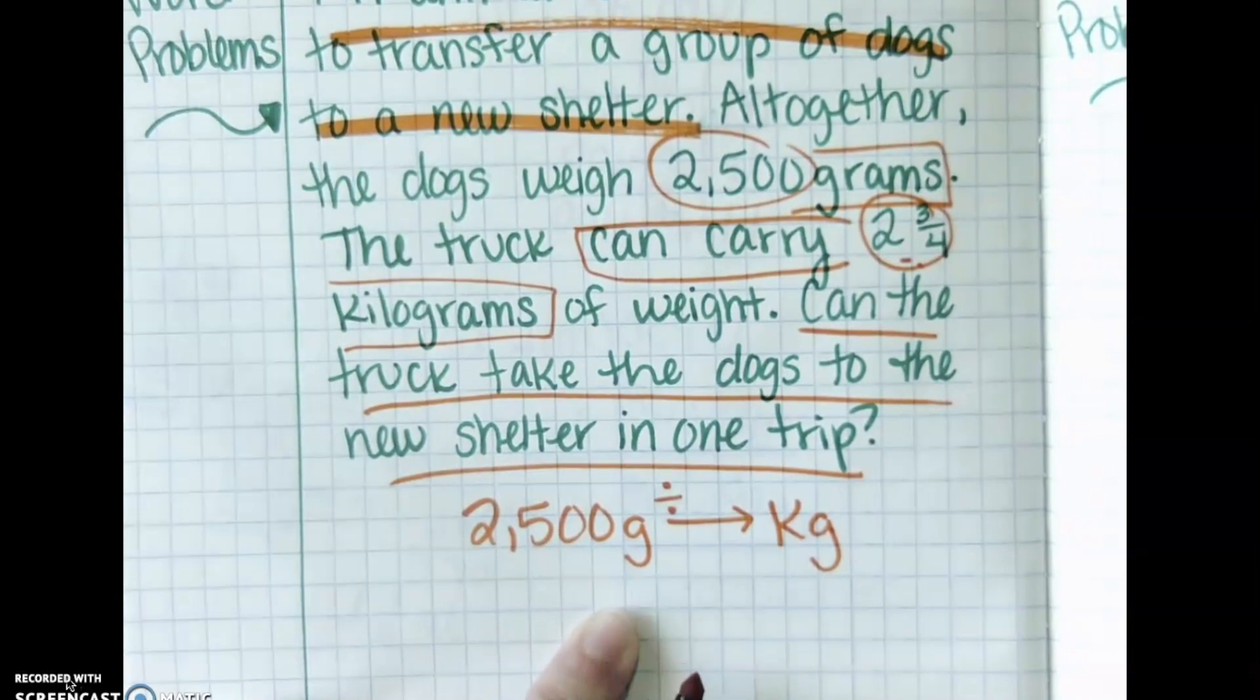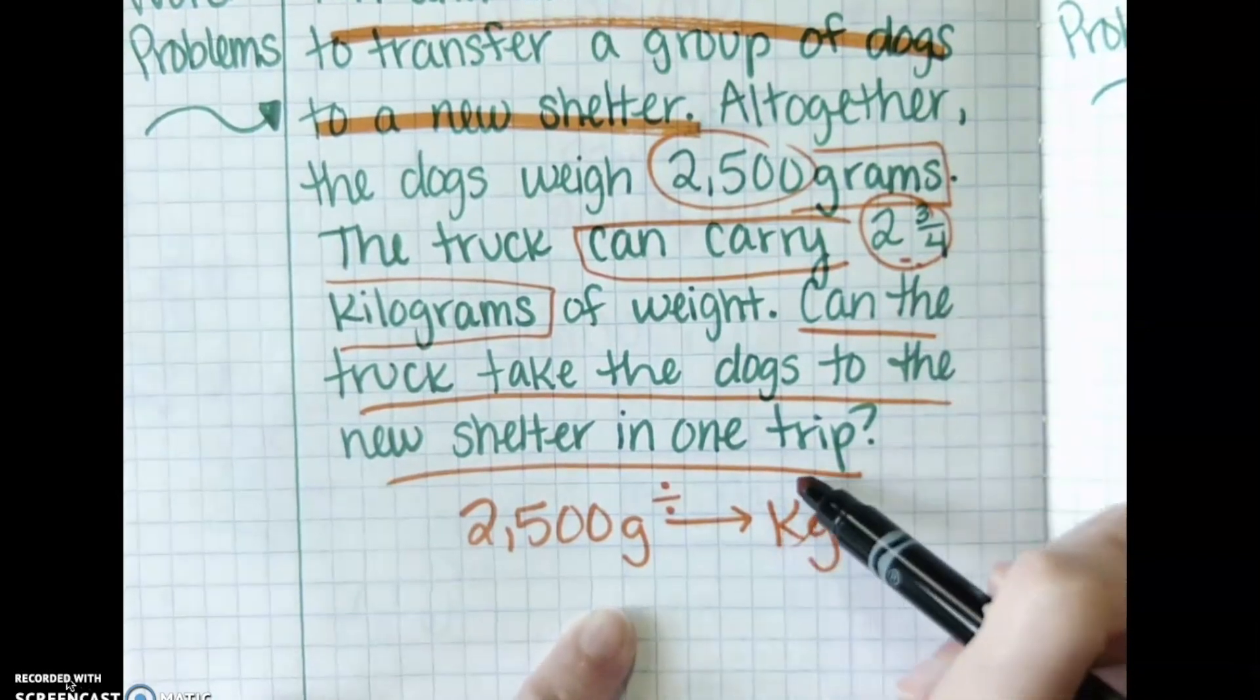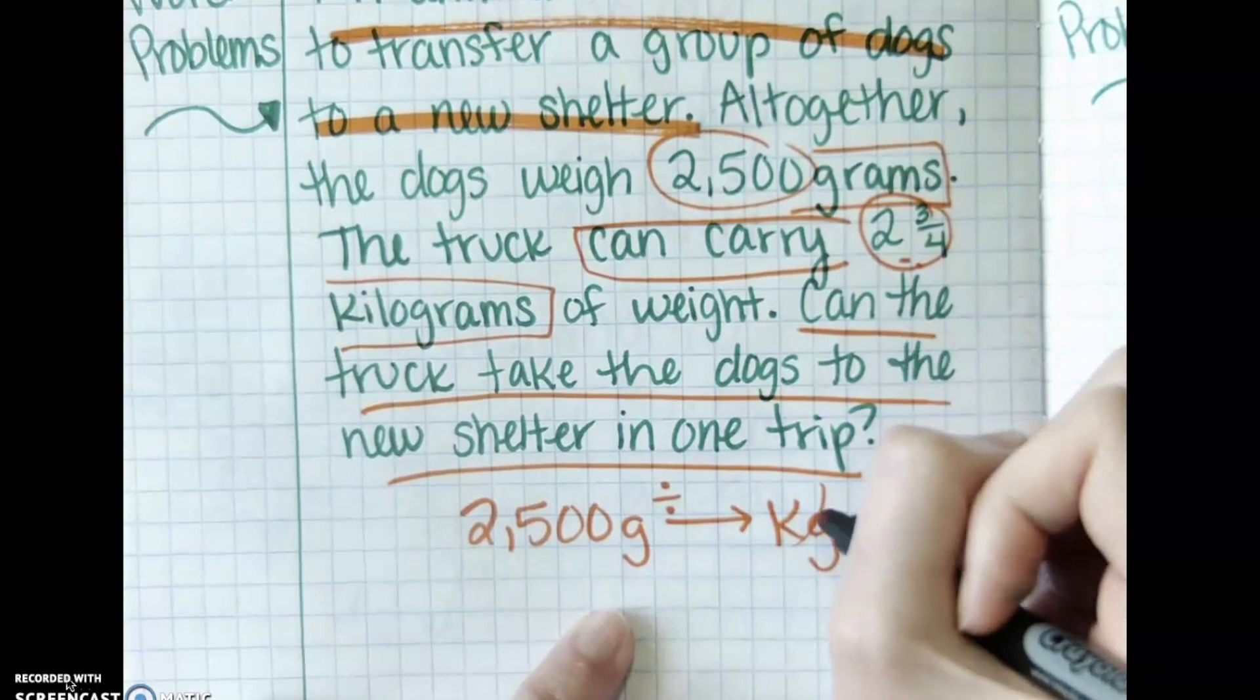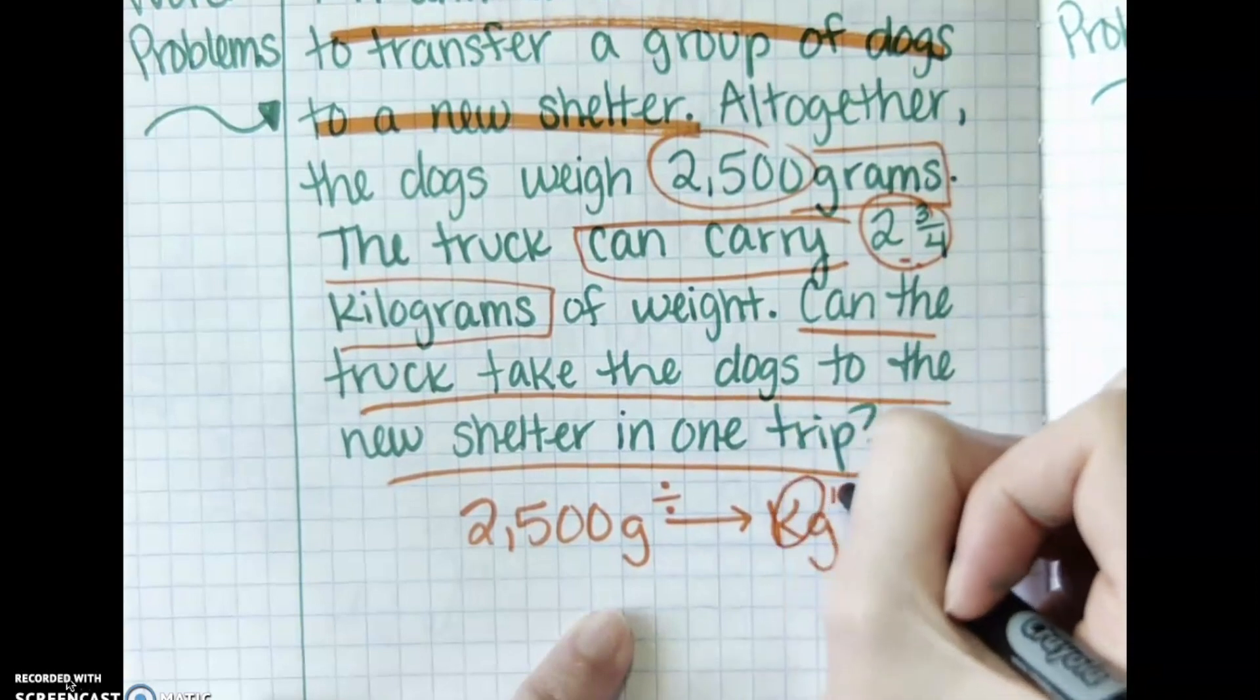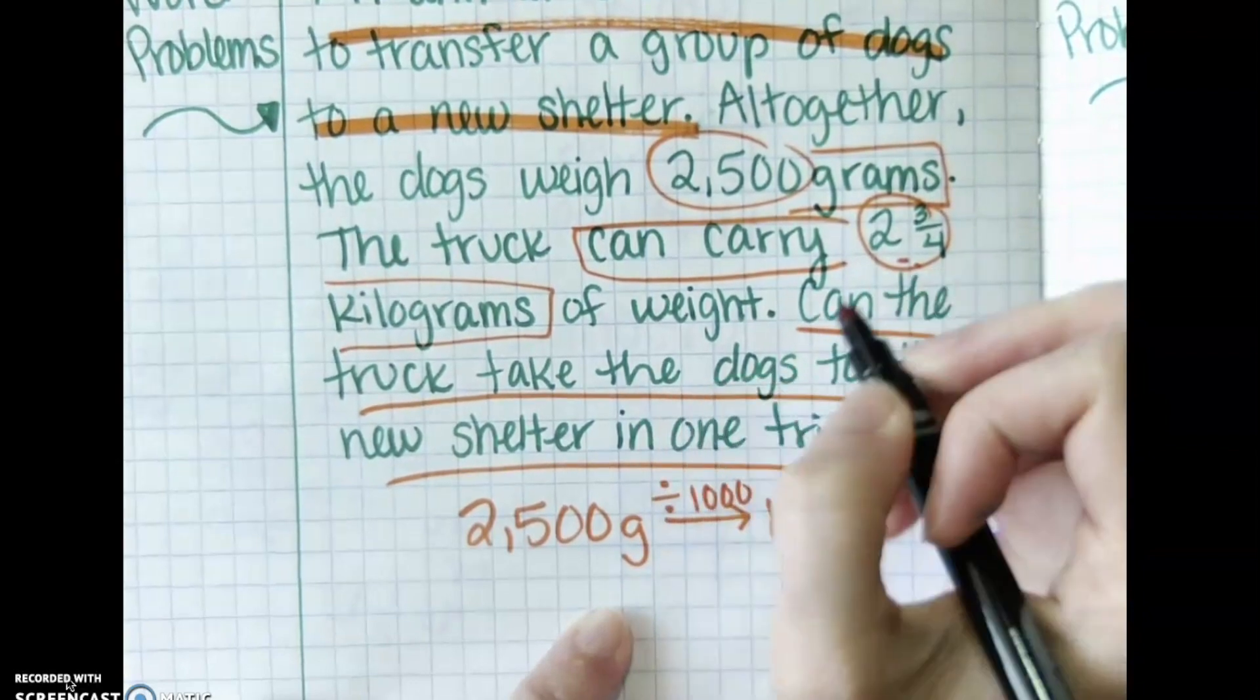So now I have to think about how many grams are in a kilogram. Look at the prefix. Kilo means thousand, thousand grams. A kilogram is 1,000 grams. Let me circle that. 1,000. Kilo is 1,000. So I am dividing by 1,000.